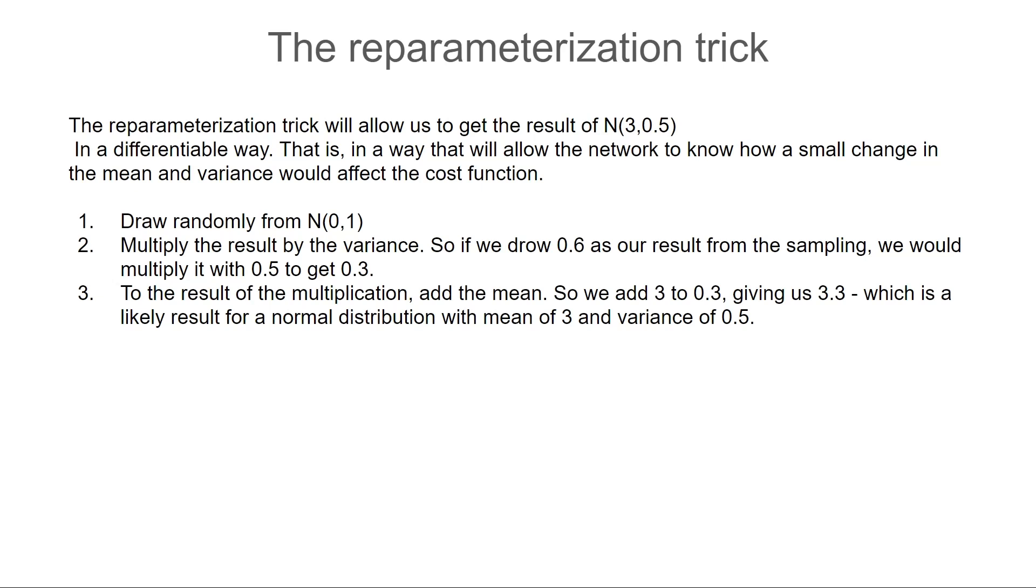Now the reason this is the same as just simply picking from a distribution with our own mean and variances that our network generated is that all we are doing is reversing the order of operations of sampling. Instead of deciding on the distribution means, variance, and then sample from it, we first sample and get the randomness out of the picture, and then see what is the corresponding value in the distribution we chose.